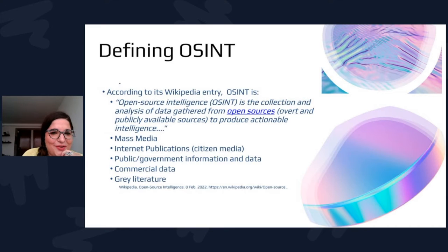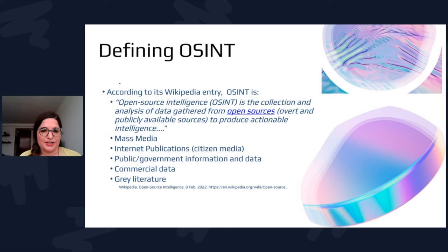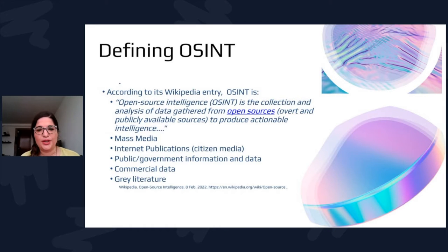The Wikipedia entry outlines a few information streams which I'll talk about throughout this presentation: mass media, internet publications, government information and data, commercial data, and grey literature. What I like about this definition is it gets to the core of what information will be most useful for a privacy professional in terms of monitoring changes.